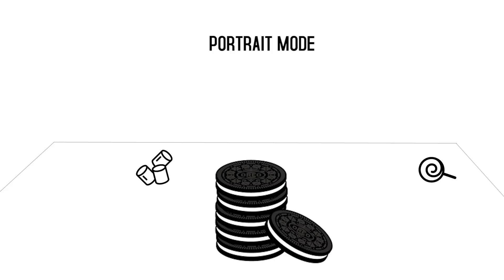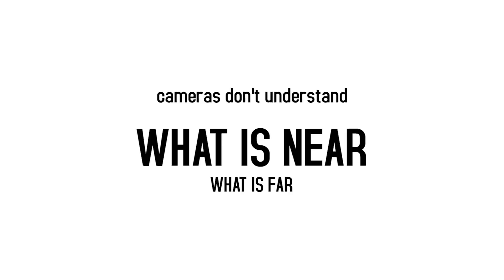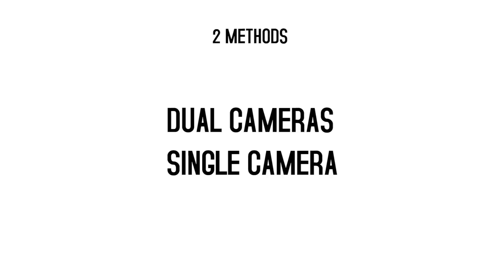Let's see how the portrait mode algorithm works. Like I mentioned in the beginning of this video, it has to keep that sharp focus on what's near and blur out the things which are far away, which is called a synthetic shallow depth of field. This whole concept of determining what's far and what's near is the real challenge, because cameras don't understand what's near and what's far. So this is determined by two methods: first is by using two cameras, and second is just using one single camera.